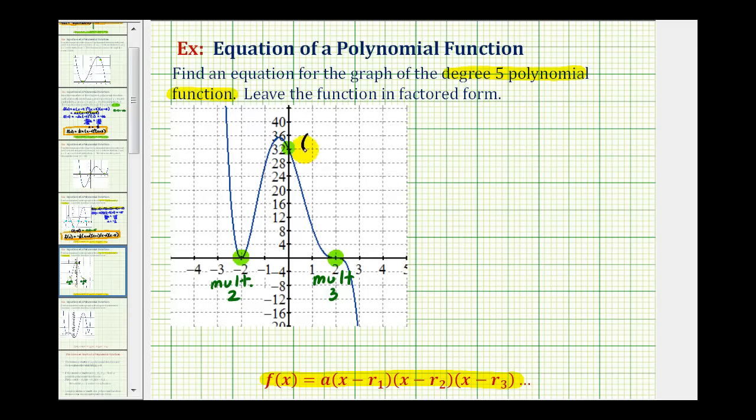So we use the point with coordinates zero, thirty-two. So what we'll do is first find the factors of our quadratic function. And then we'll use this point here to determine the value of a.